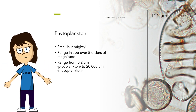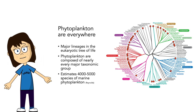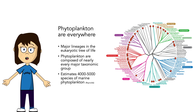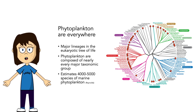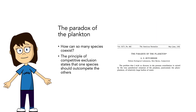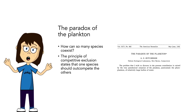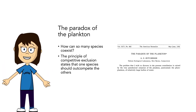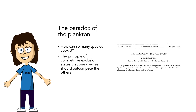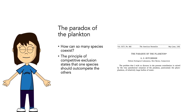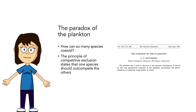Phytoplankton are found in almost all of the major lineages in the eukaryotic tree of life and are composed of nearly every major taxonomic group. There are some estimates of about 4,000 to 5,000 species of marine phytoplankton, and the number is probably similar for freshwater. But take a minute to think about that — how can so many species coexist? We've learned that species have fundamental and realized niches, but with that many species, you'd think competition would mean only the fittest would survive. The principle of competitive exclusion states that one species should outcompete the others.